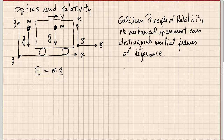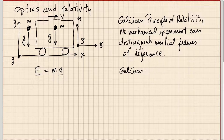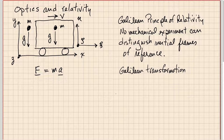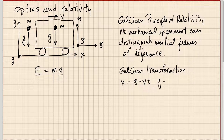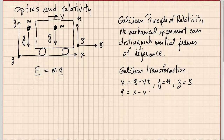The relation between these coordinate systems is given by what we call a Galilean transformation. The x coordinate on the earth equals the x coordinate on the train plus vt. Y equals eta, and z equals zeta — there's only a non-trivial relationship in the direction of motion. Turning things around, psi equals x minus vt, and the other two relations still hold.